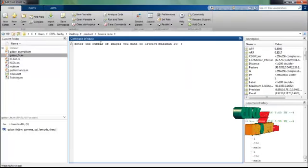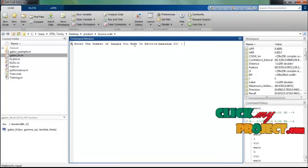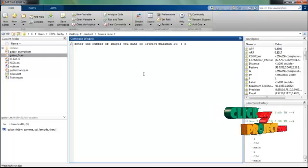Now we have to give a number of images that we want to retrieve from the database. Now we give 5 images. Now the MATLAB will return only 5 images from the database. If it gives 10, then it will give 10 images.